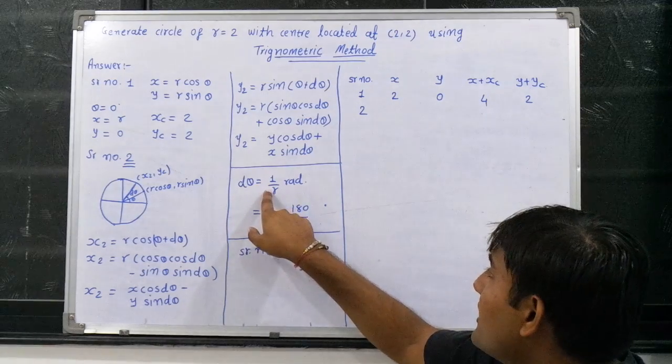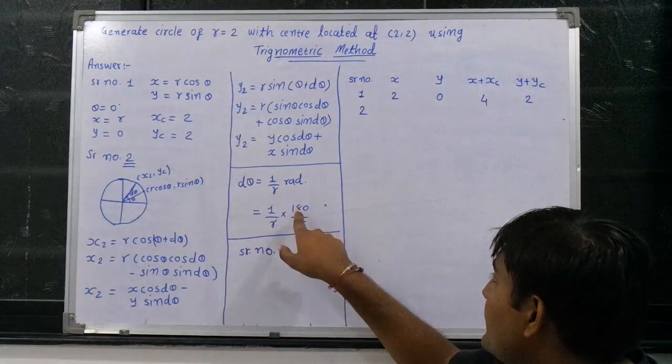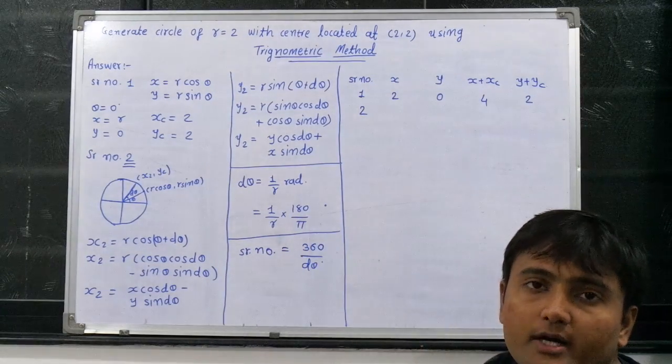But now another angle is plotted at d theta angle. What is d theta angle? d theta is equal to 1 upon r in terms of radian, and 1 upon r multiplied by 180 divided by pi to convert the radian into degrees.